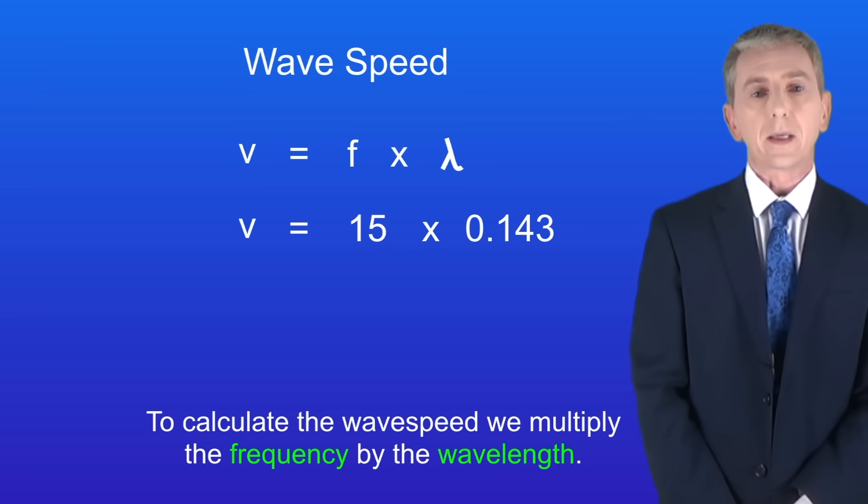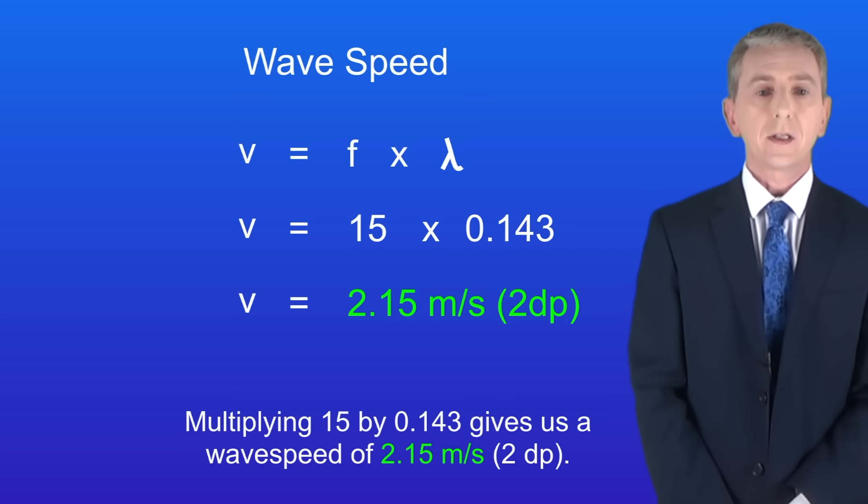Okay to calculate the wave speed we multiply the frequency by the wavelength. Multiplying 15 by 0.143 gives us a wave speed of 2.15 meters per second to two decimal places.